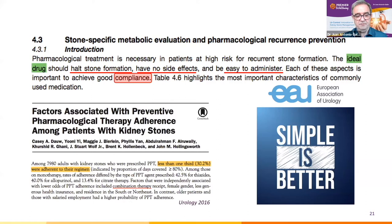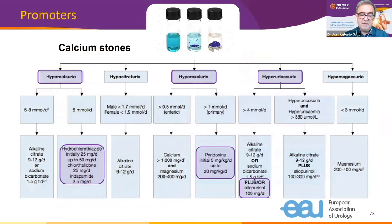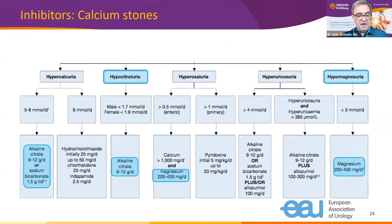The most frequently found abnormalities in calcium stone formers are increased excretion of promoters — the most frequent being hypercalciuria — but also decreased inhibitors, the most important being citrate. The treatment is well established for each particular case, and sometimes combinations of drugs are needed. Deficit of inhibitors can be managed by administering potassium citrate in cases of hypercalciuria or hypocitraturia, and magnesium in cases of hyperoxaluria or hypomagnesuria.